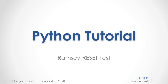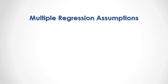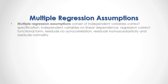Python Tutorial: Ramsey Reset Test. Multiple regression assumptions consist of independent variables correct specification, independent variables no linear dependence, regression correct functional form, residuals no autocorrelation, residuals homoscedasticity, and residuals normality.